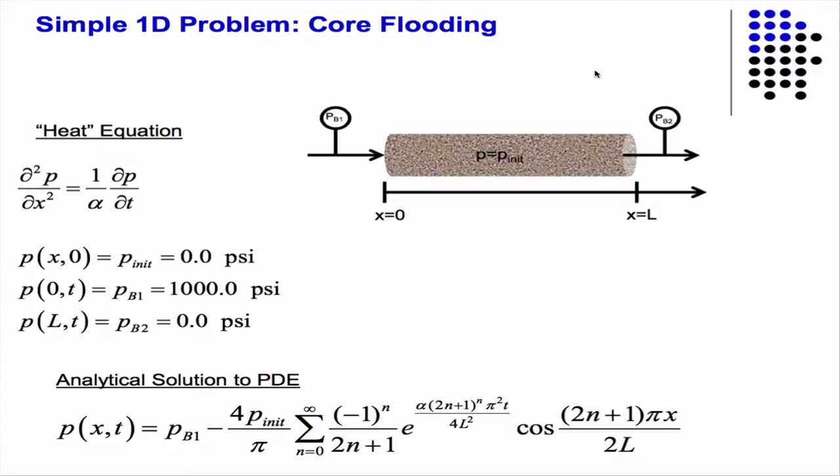So, back to 1D for a second. Here's an example. A 1D, a good approximation of 1D diffusivity is core flow. So we have a core, a homogeneous core, and we're going to flow water through it.